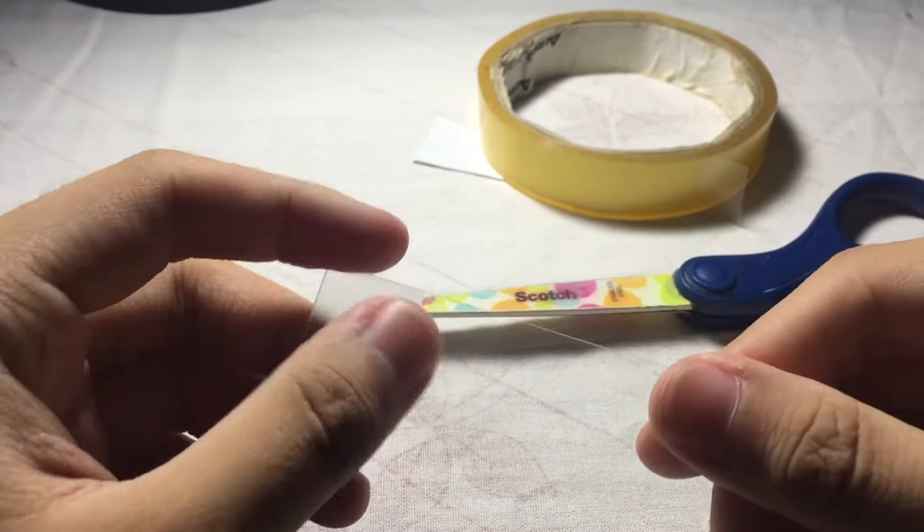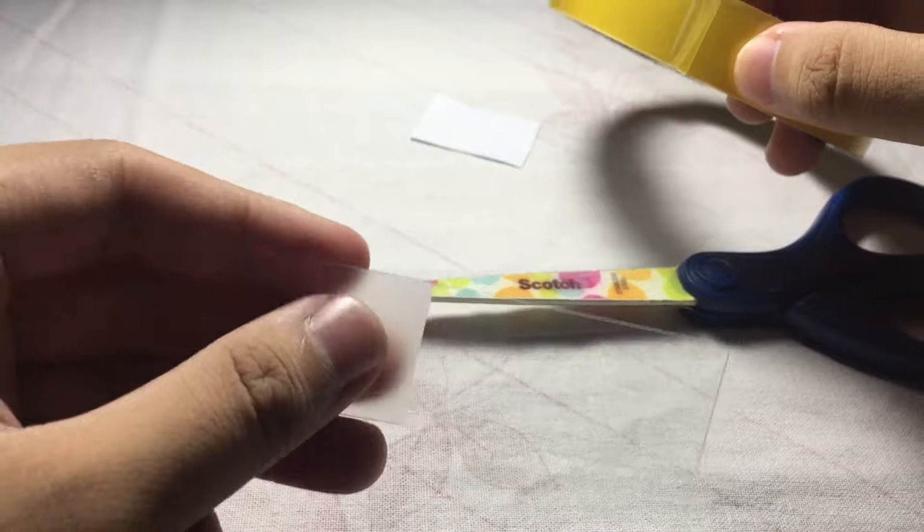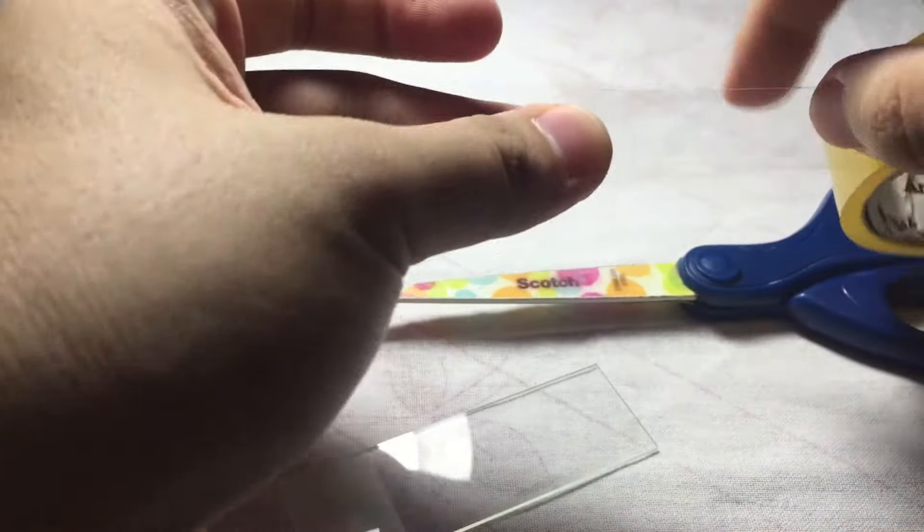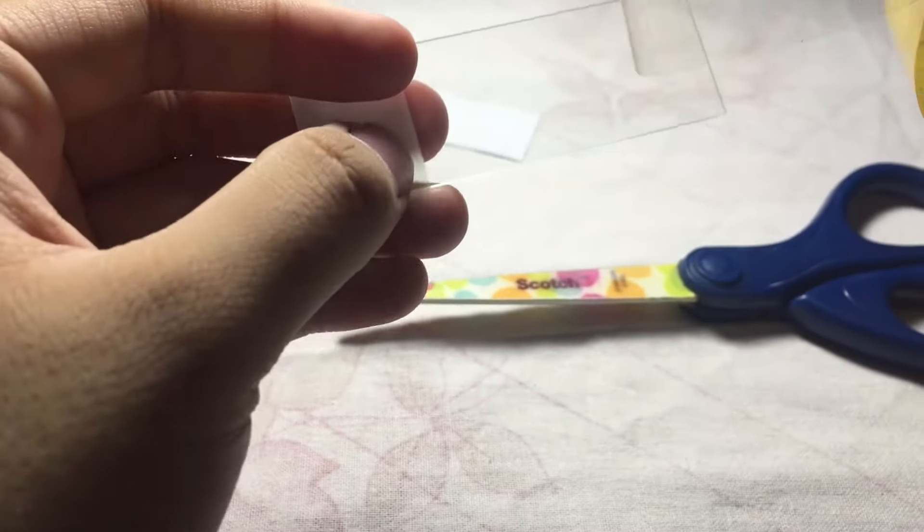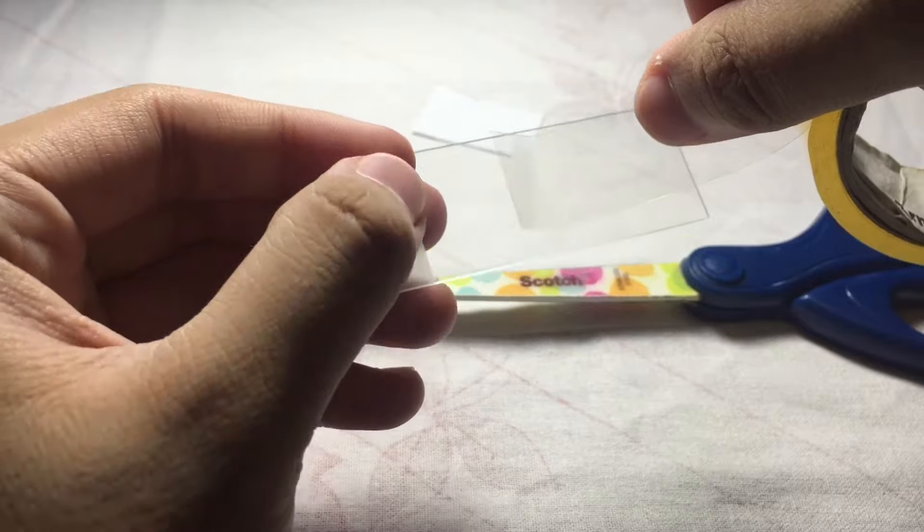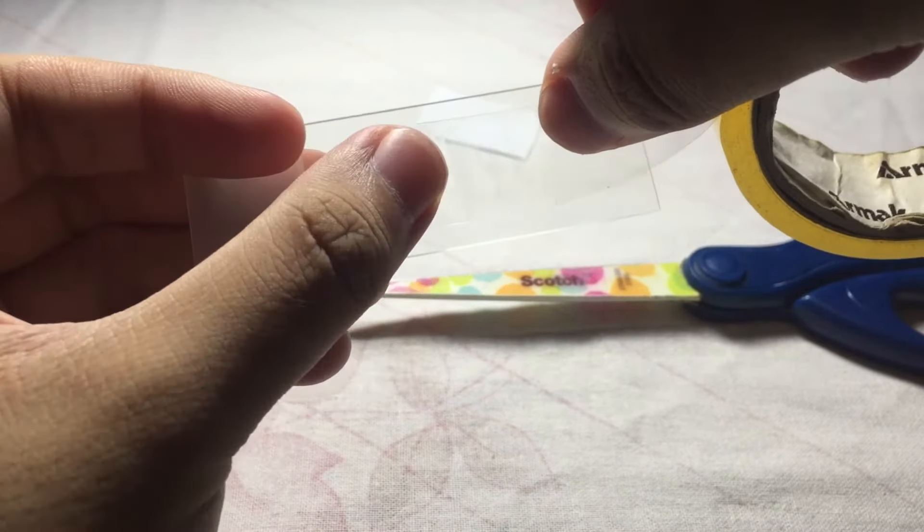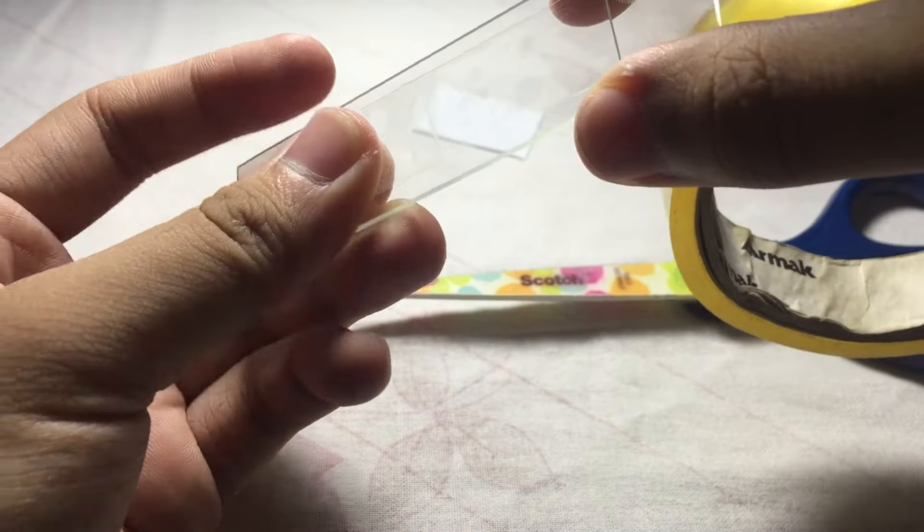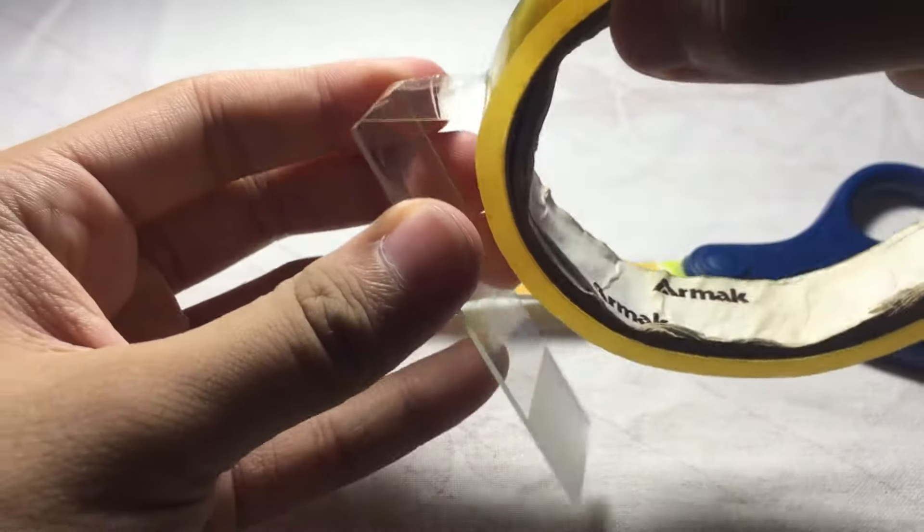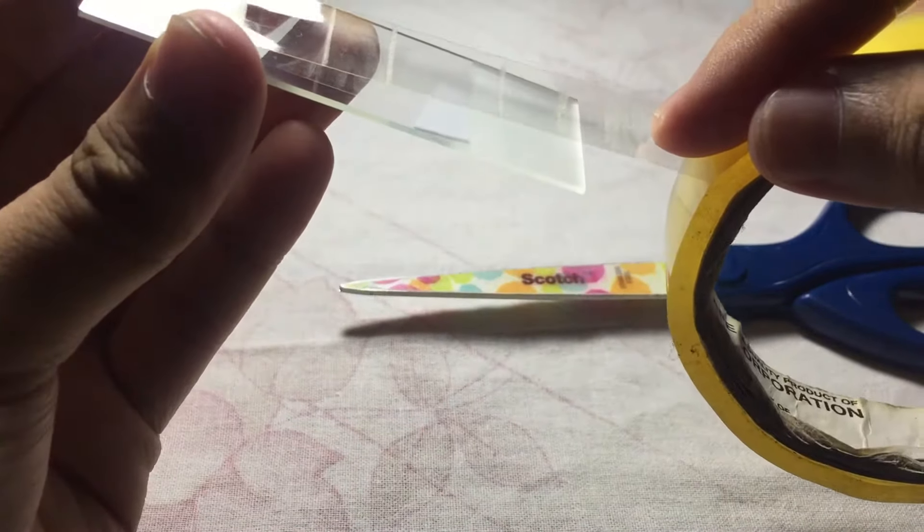We then get your scotch tape. As you can see, it's already freed. Then we stretch that, and at the back of your slide you then attach the freed end about half. Then you pull your scotch tape swab all over the slide, the length of the slide until the end.